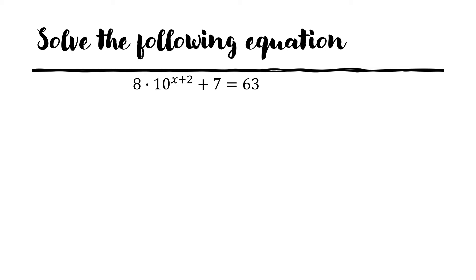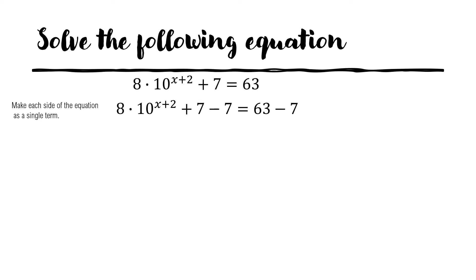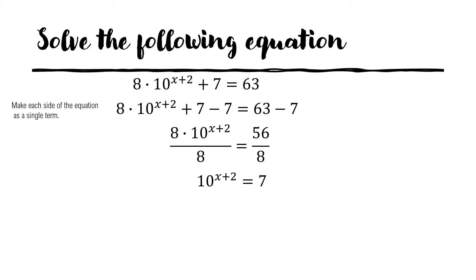These are properties of logarithm — the laws of logarithm. On the first step, we make sure that as much as possible, we have one side of the equation as a single term. So in this case, we subtract both sides by 7: 7 minus 7 is 0, and 63 minus 7 is 56. We want an exponent with a single base. Since the 10 raised to x plus 2 is multiplied by 8, we divide both sides by 8. So we have 10 raised to the power of x plus 2 equals 7.